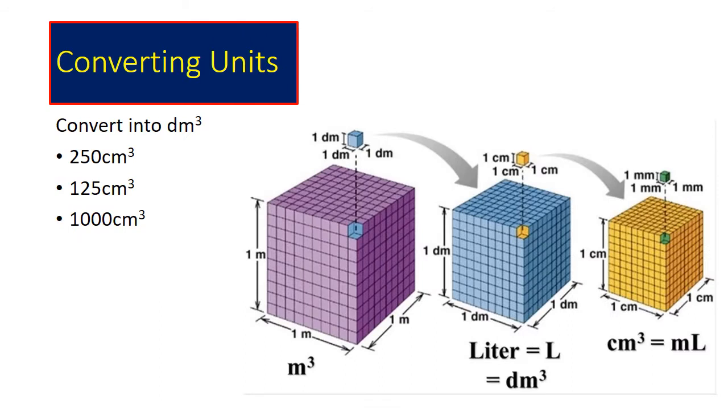We also need to be able to convert units. You've noticed in these mole calculations that we've done previously, all our volume needs to be in decimetre cubed. So convert these into decimetre cubes: 250 cm³, 125 cm³, and 1,000 cm³.